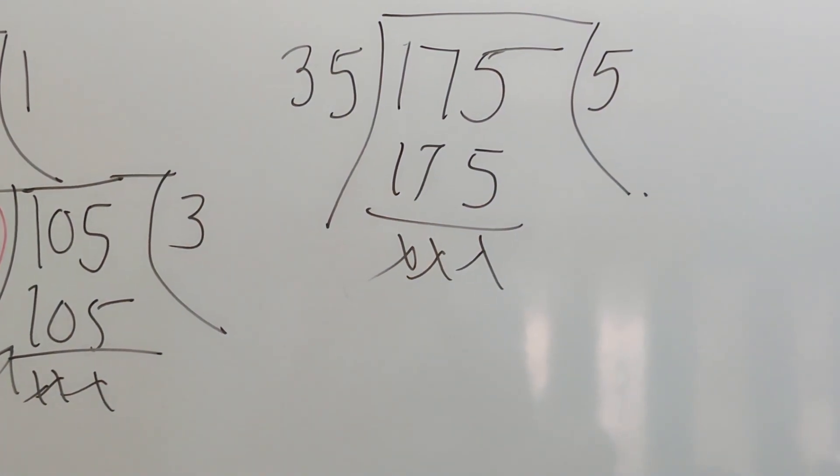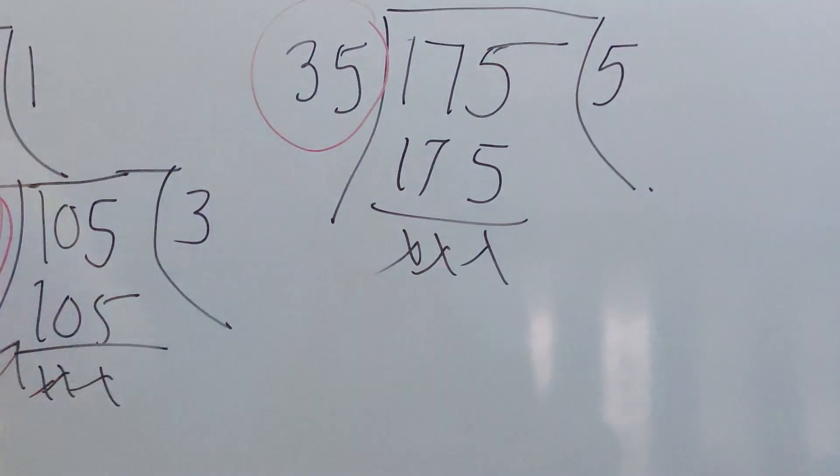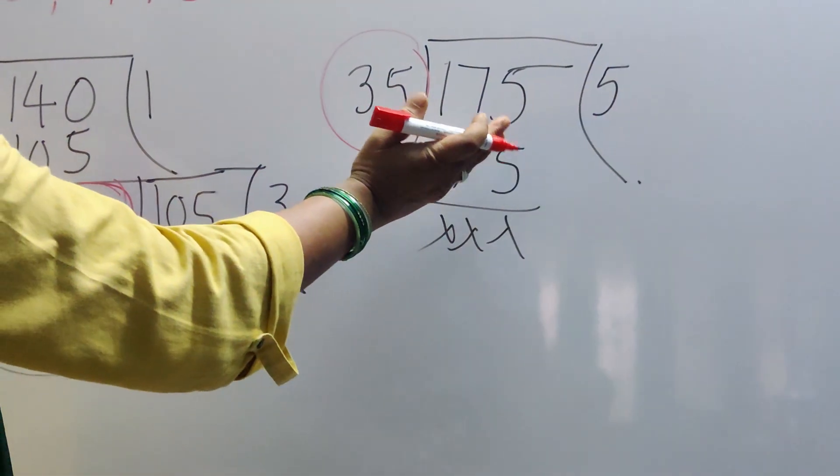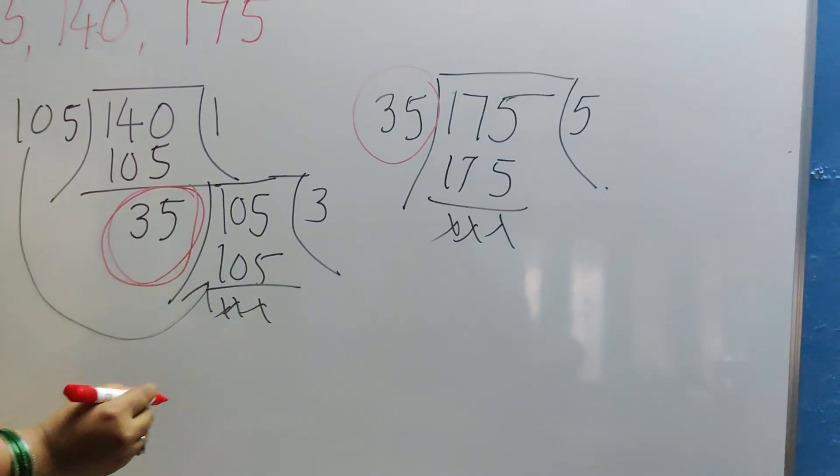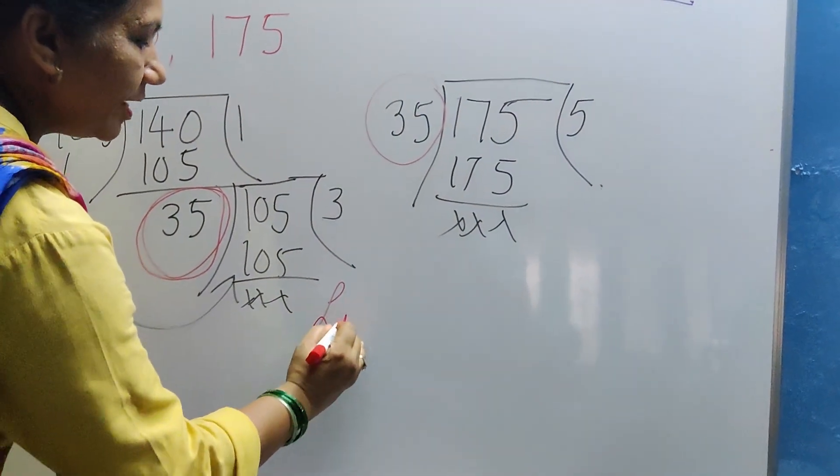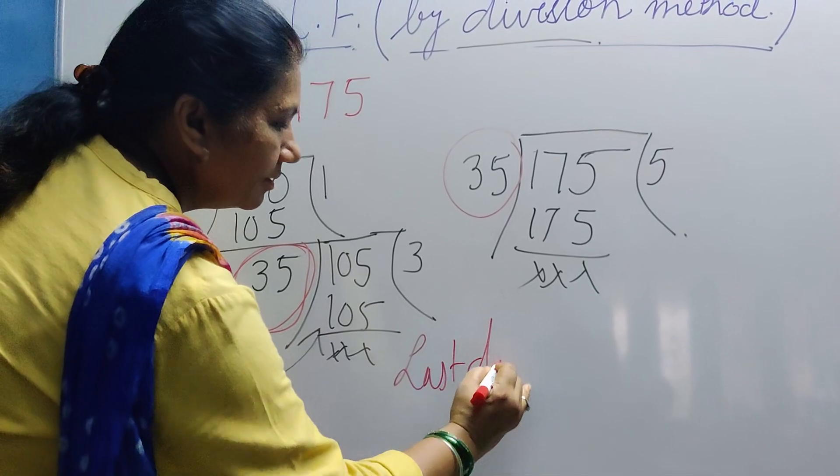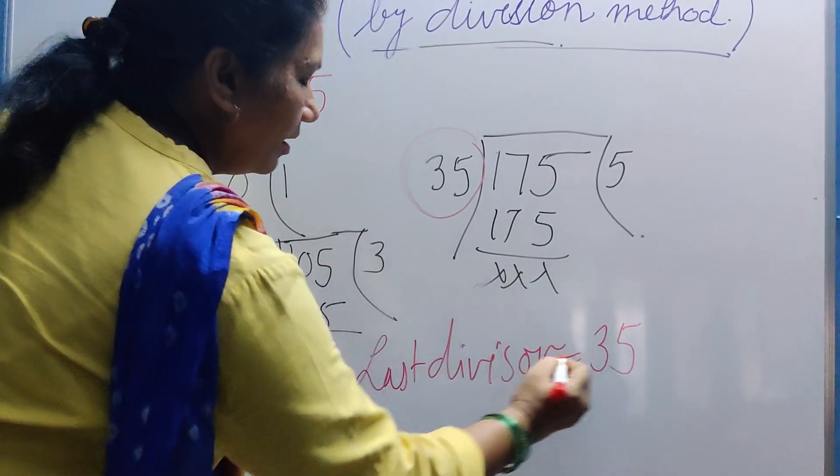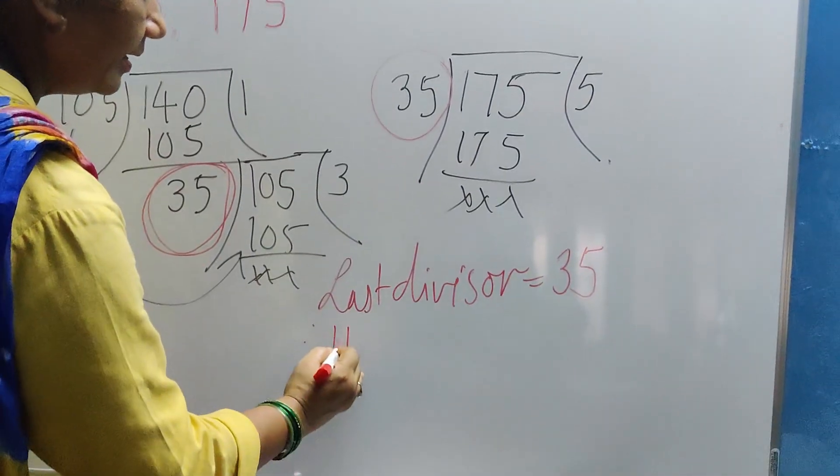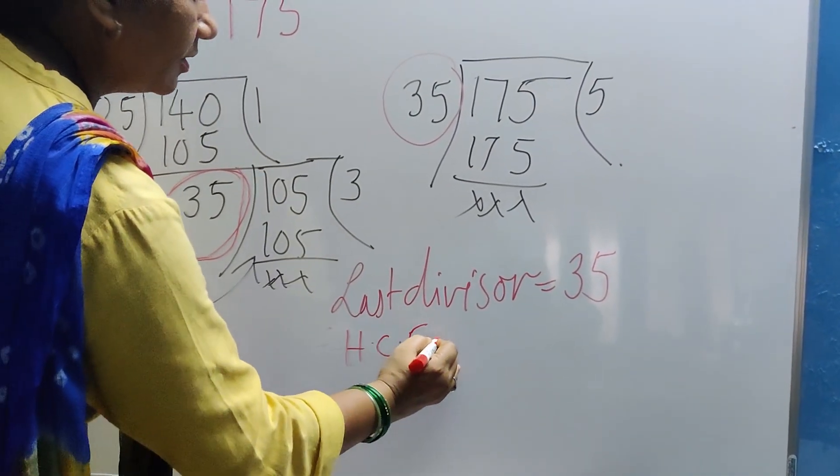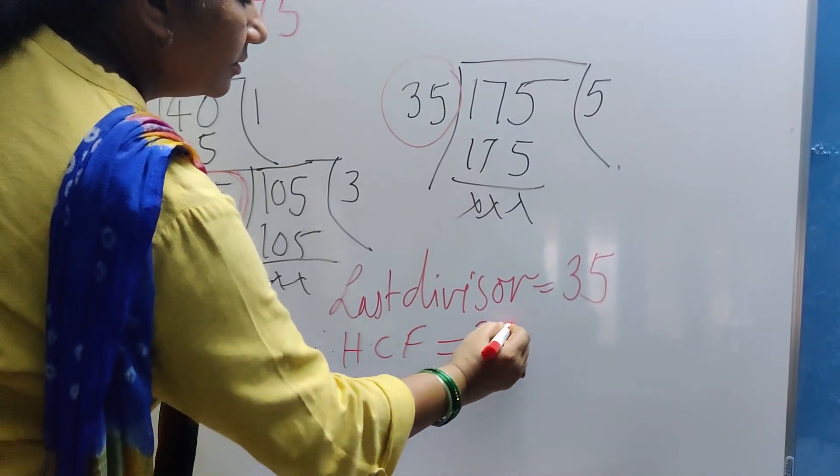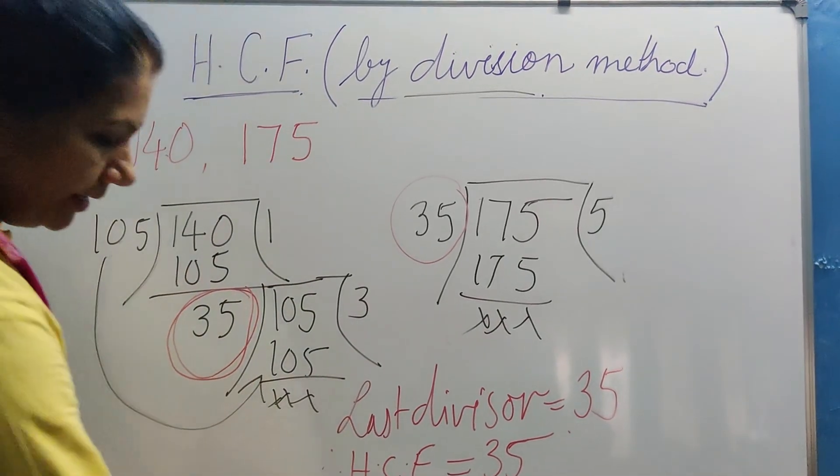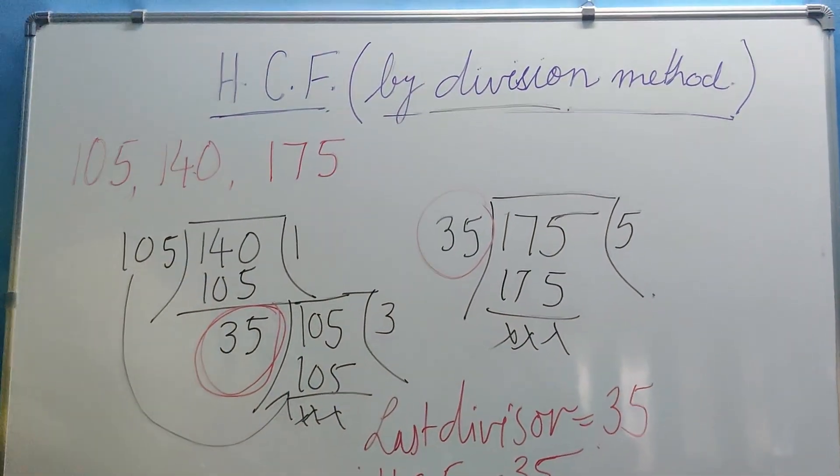Now again, we have to be focused on what? The last divisor. The last divisor will not be considered from here. It has to be considered from the last number which you are dividing. Now what is the last divisor? Last divisor is 35. And therefore, HCF is equal to 35. So this is how we find HCF by division method.